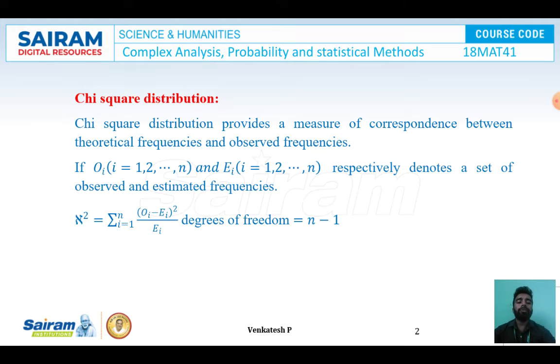What is chi-square distribution? The chi-square distribution provides a measure of correspondence between theoretical frequency and observed frequency.